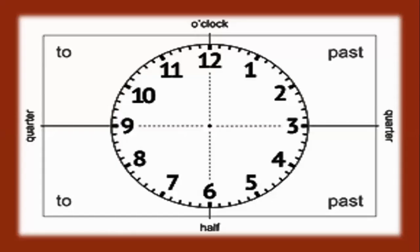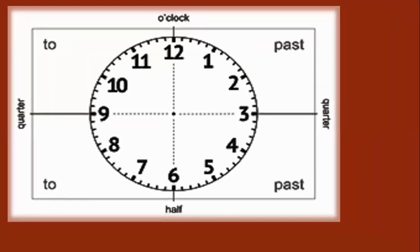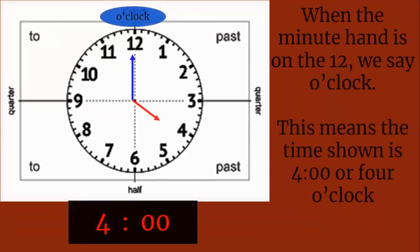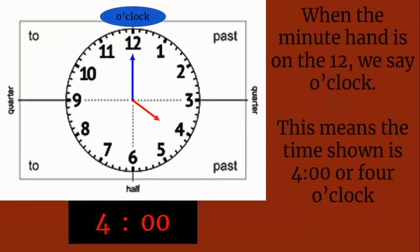The face of the analog clock is divided into four sections we call quarters. When the minute hand is on the 12, we say o'clock. This means the time shown is 4 o'clock.